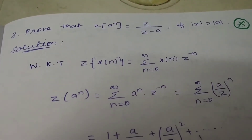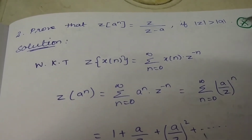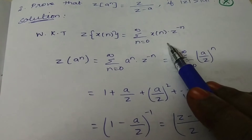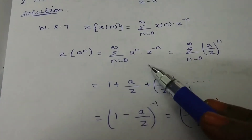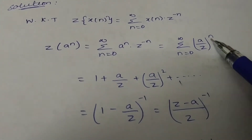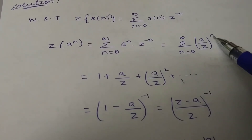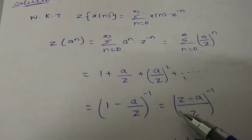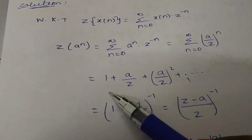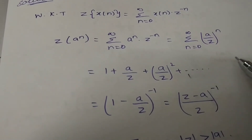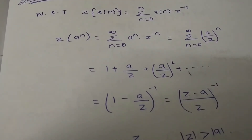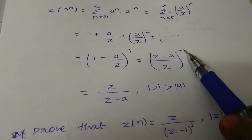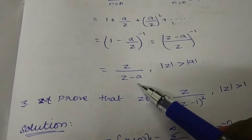Next problem: prove Z{a^n} = z/(z-a). First apply the formula with x(n) = a^n substituted. Combine terms as (a/z)^n. First term when n=0 is 1, second term is a/z, then (a/z)² plus etc. This is in the format 1 + x + x² + etc., so use (1-x)^(-1) with x = a/z. Simplify using LCM, and the result is z/(z-a). Proved.